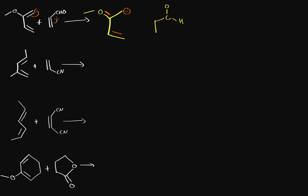What ends up happening is that the first pi bond moves over here, and the second pi bond on the oxygen moves and becomes a negative charge on the oxygen. So we have a new pi bond over here, a negative charge on the oxygen, and a positive charge on this carbon. That means that this carbon right here and this carbon right here are the most reactive and they want to bond.